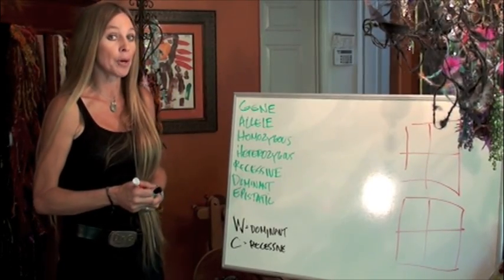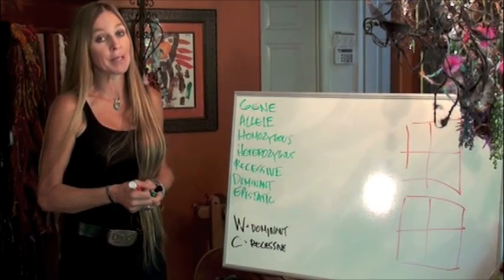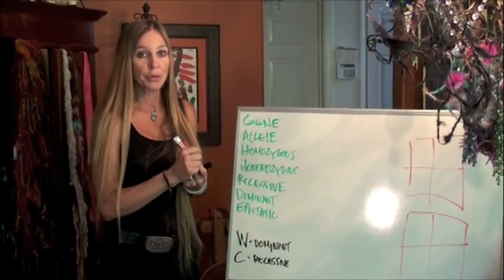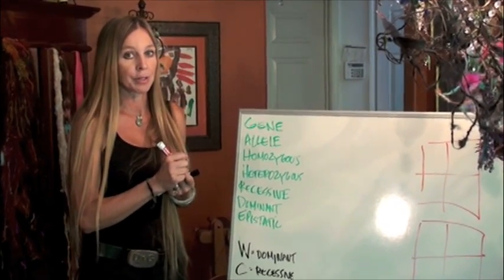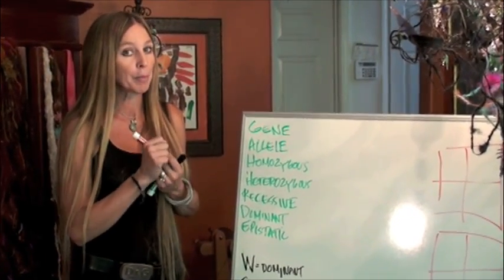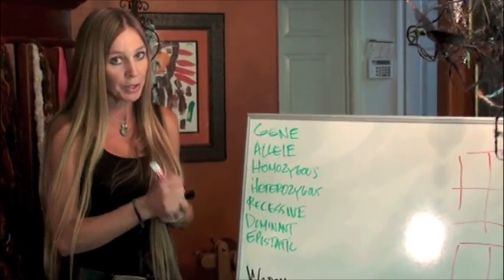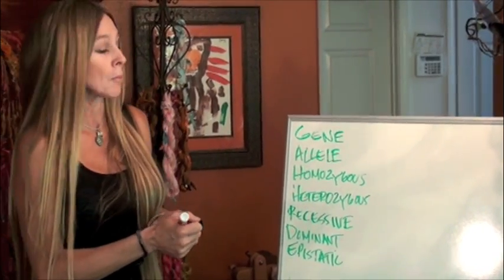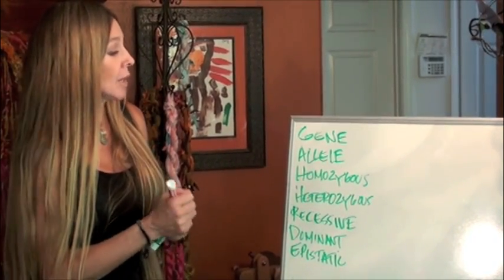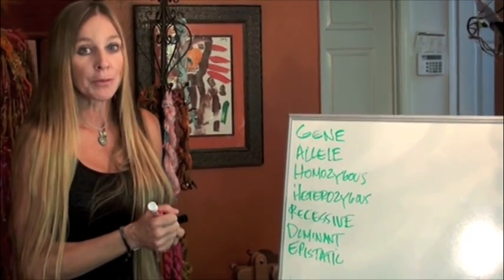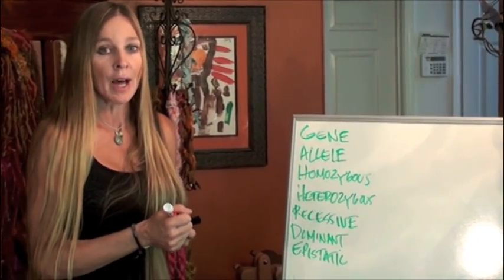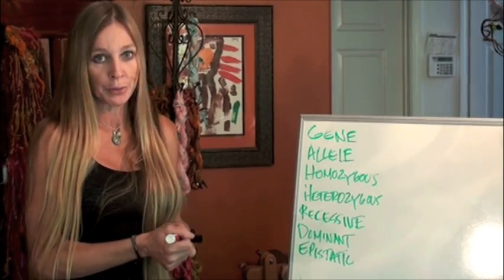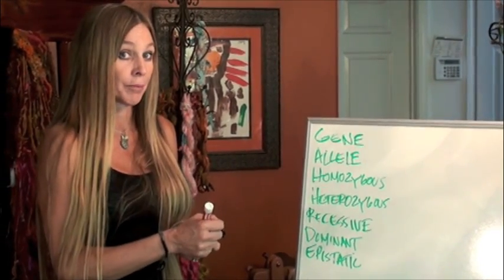So here we are at the whiteboard, and this is going to be basic Bio 101. A gene is the smallest unit of inheritance. Genes come in pairs — one donated from the mother and one donated from the father. An allele is an alternate form of a gene. In eye color, it would be brown and blue — those are alleles for the same gene.